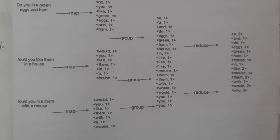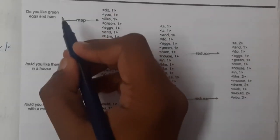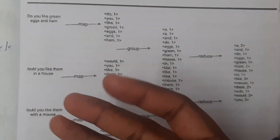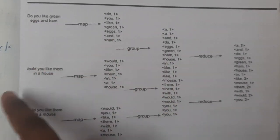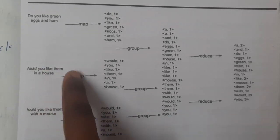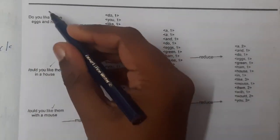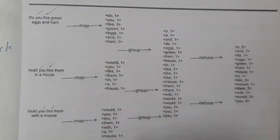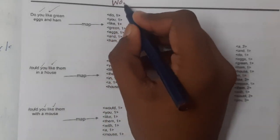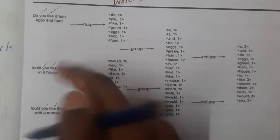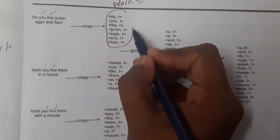Now let us go through a MapReduce example. Here we are trying to do a word count operation — counting the number of words across sentences. We gave three input strings: 'Do you like green eggs and ham', 'Green eggs', and 'Would you like them in a house', 'Would you like them with a mouse'. If you observe, words like 'like' and 'you' are common across all inputs.